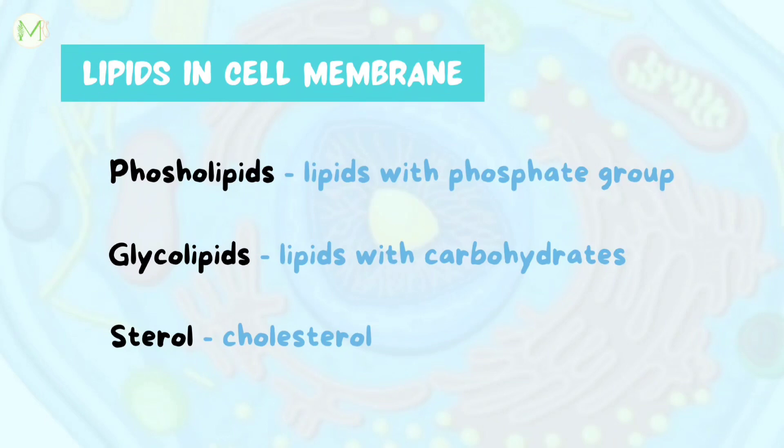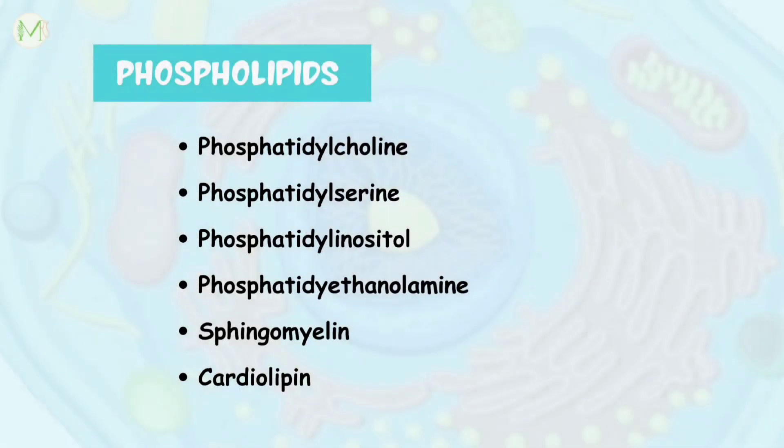Lipids are unequally distributed. Glycolipids are usually seen on the outer side, whereas phospholipids are seen on the inner side. Some types of phospholipids found on the cell membrane include phosphatidylcholine, phosphatidylserine, phosphatidylinositol, phosphatidylethanolamide, sphingomyelin, and cardiolipin.